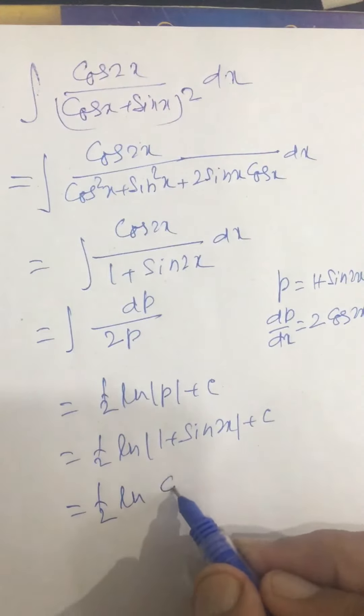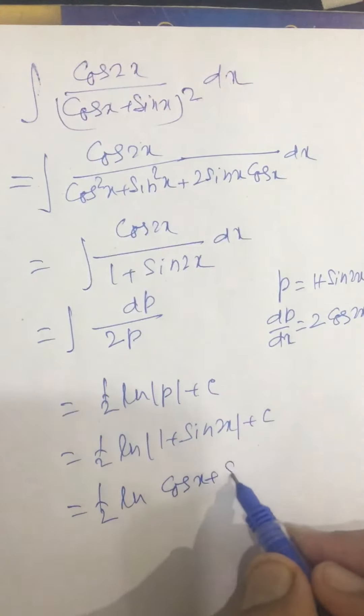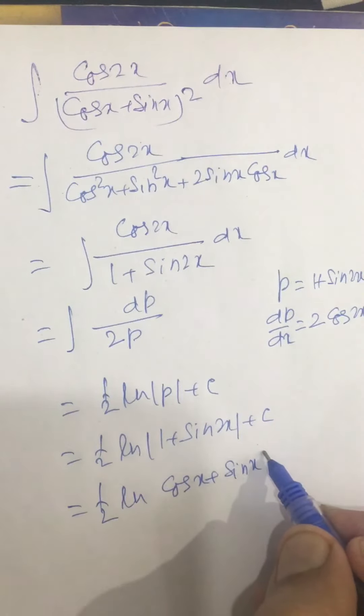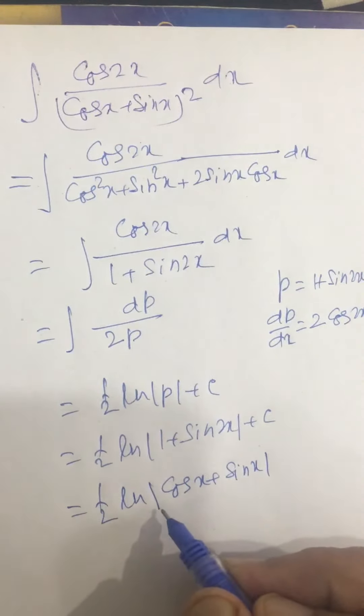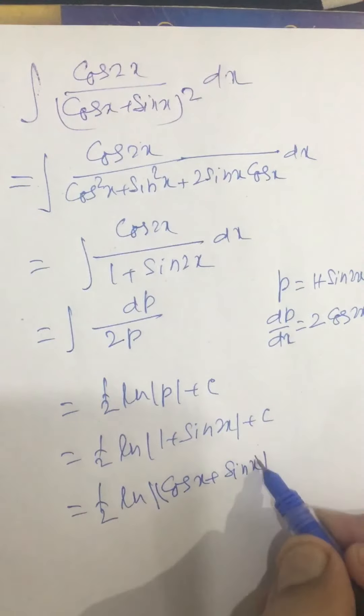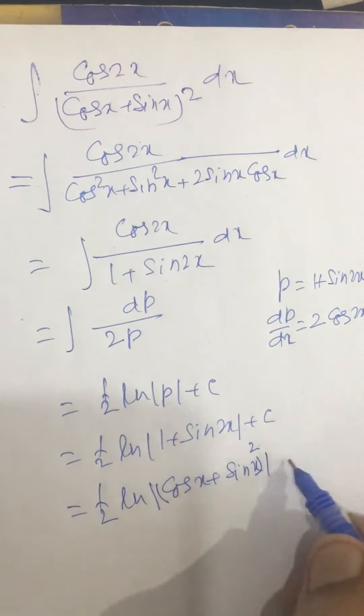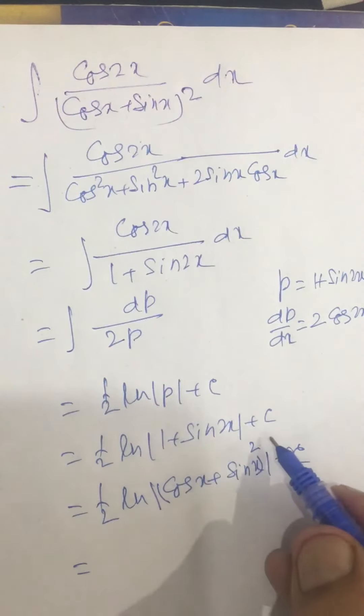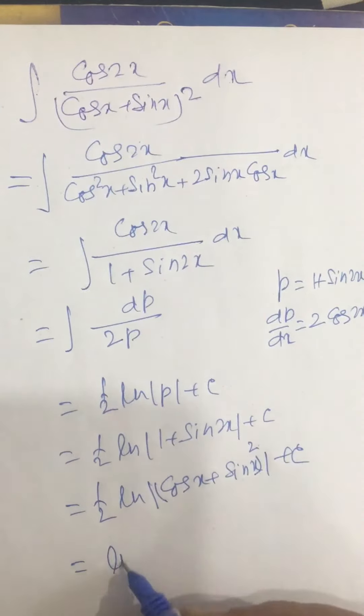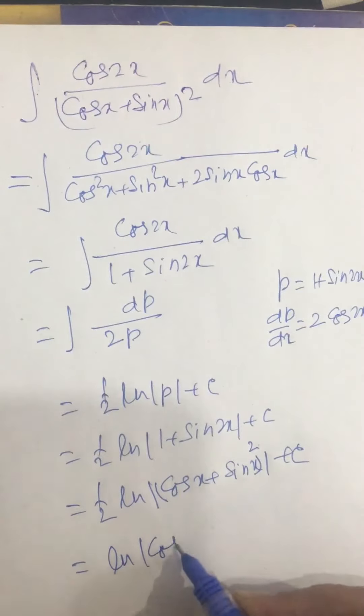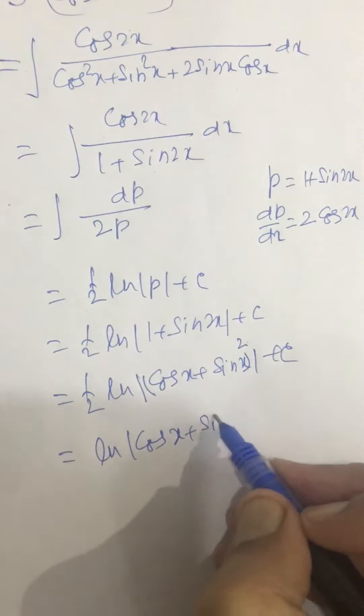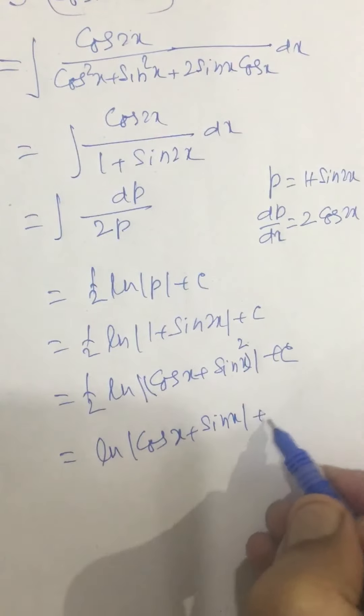This is (cosx plus sinx) whole square plus c, and this becomes on top. So this becomes log (cosx plus sinx) plus c.